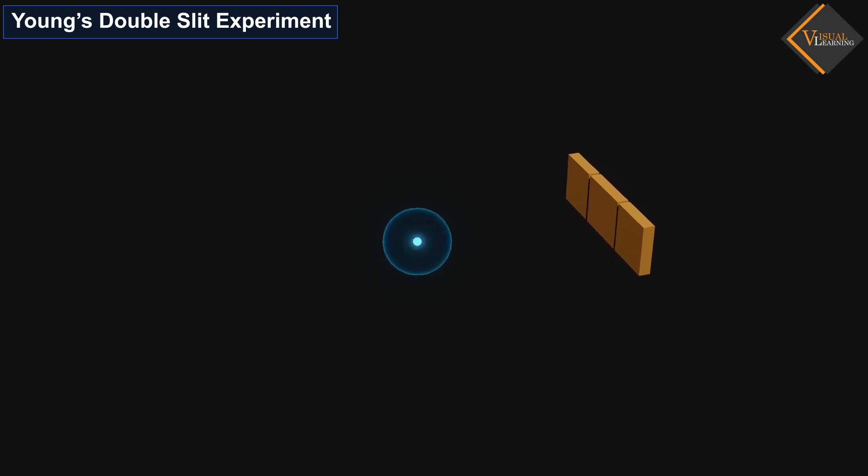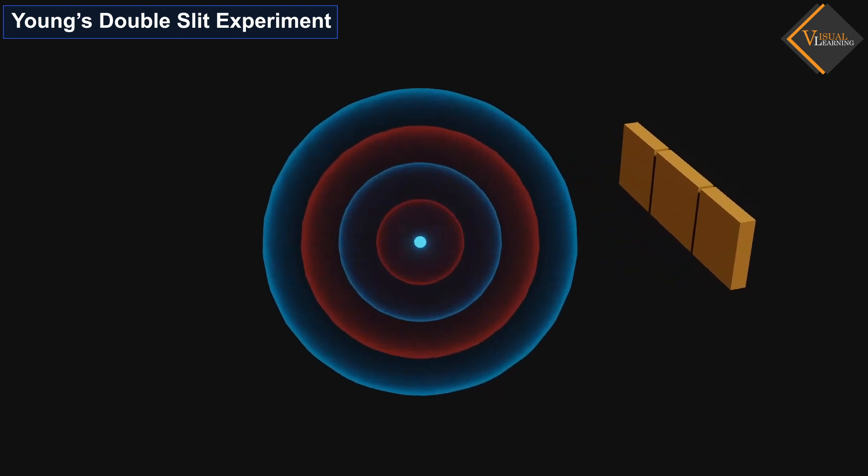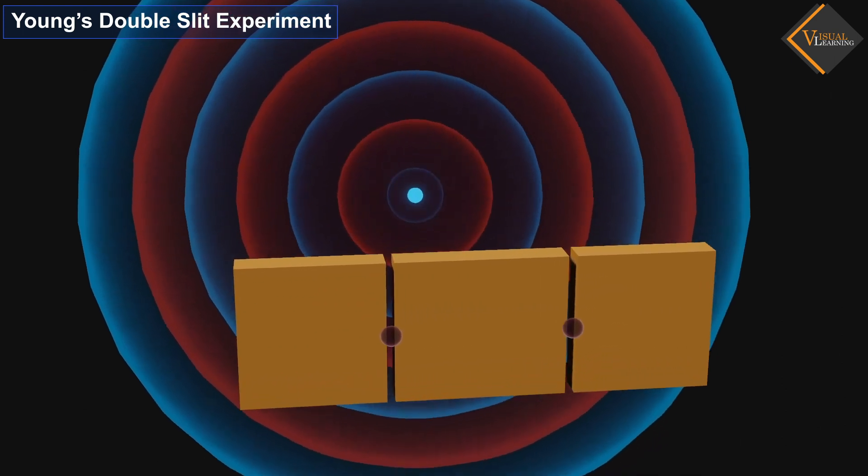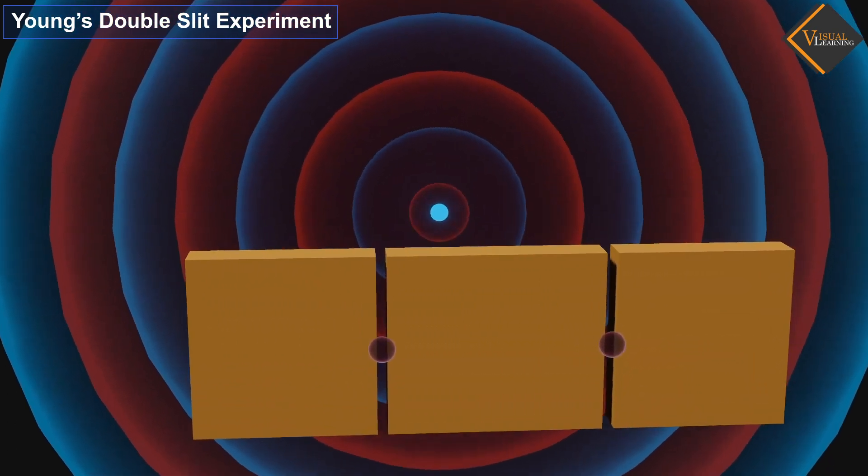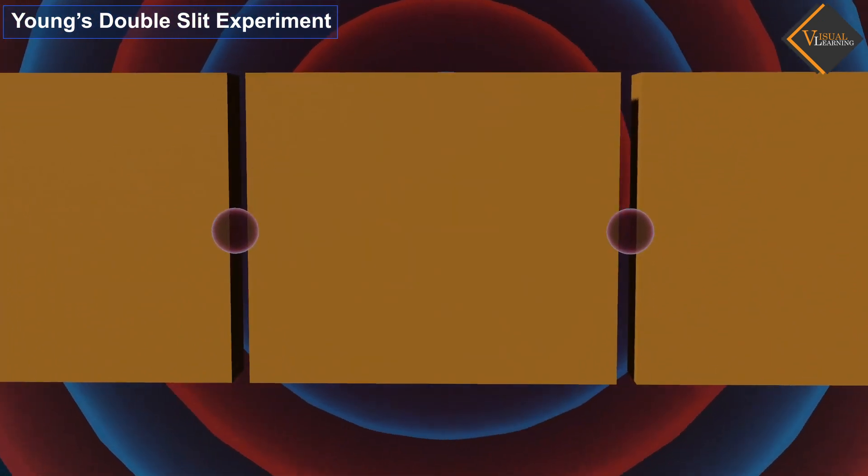In the animation, we see that when these spherical wavefronts move away from the source, the radius of the waves increase. Now, consider there are two slits placed in front of these light waves, with very sharp openings, allowing the light waves to pass through.